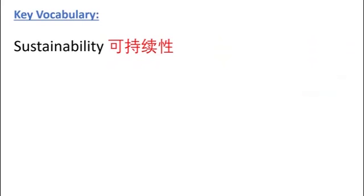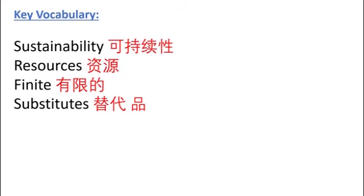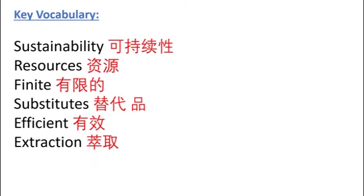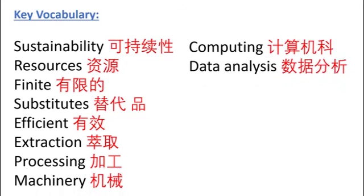Let's review some key vocabulary covered in this lesson. We have thought about what we mean by sustainability, and specifically in the context of rocks and minerals as resources. These resources are finite, meaning one day they will run out. Because they are finite, if we want to use them sustainably, we have to look for substitutes — more commonly found materials to replace rarer ones. We can also think about how to more efficiently extract these materials through mining, how to make processing more efficient through better machinery, and how to use computing and data analysis to better locate and assess the quality of deposits.